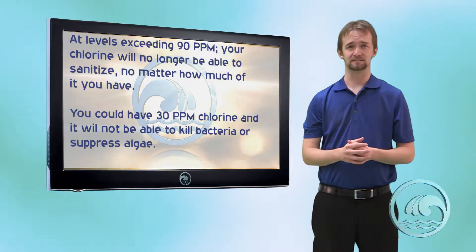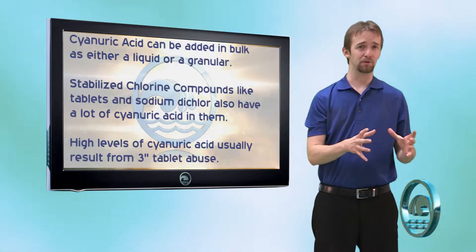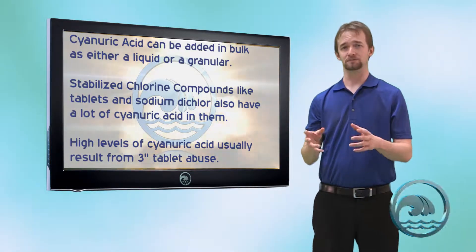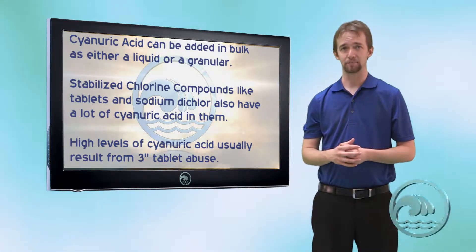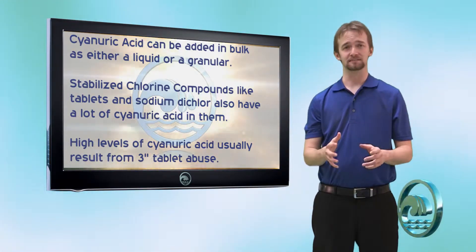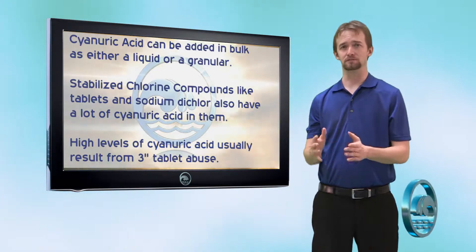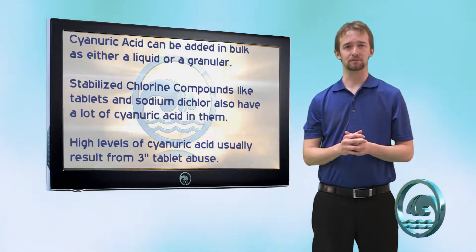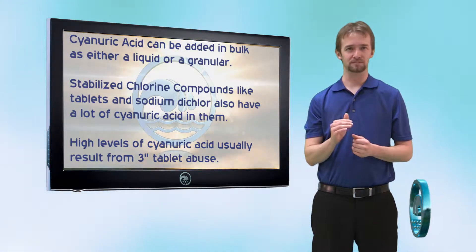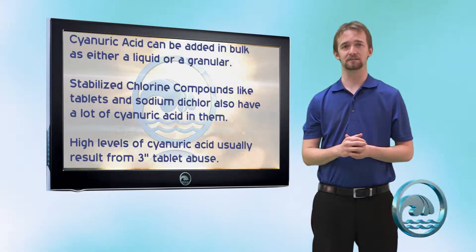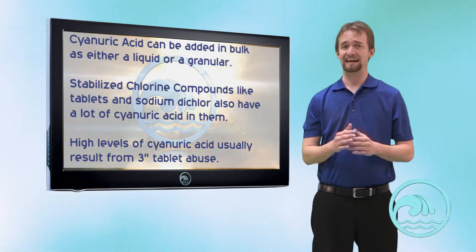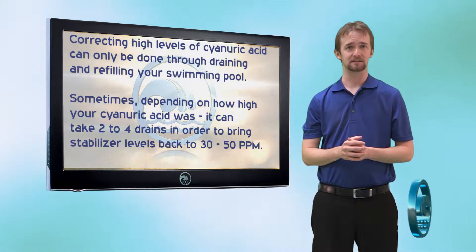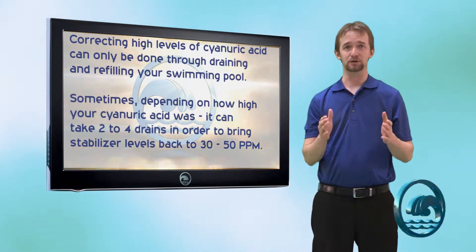Where does cyanuric acid come from? You can either add it in bulk as pure cyanuric acid, or it comes from your chlorine tablets. This is why it's important not to overuse chlorine tablets — if you use too many, you will most definitely see a high level of cyanuric acid. And the only way to correct higher levels of cyanuric acid is to drain your pool.